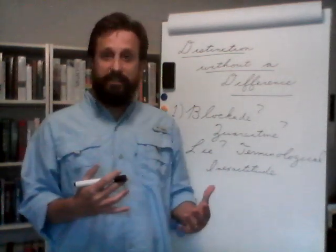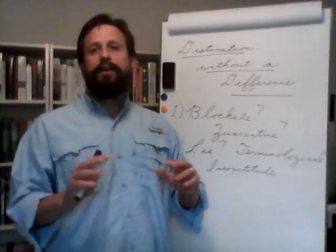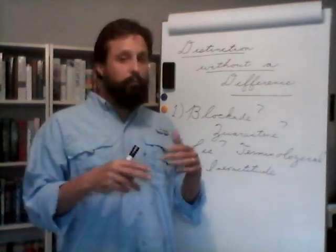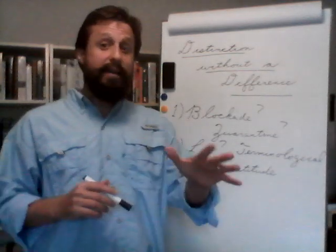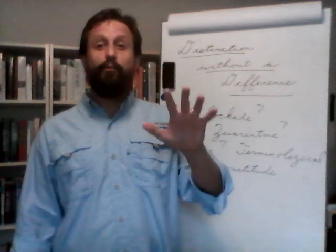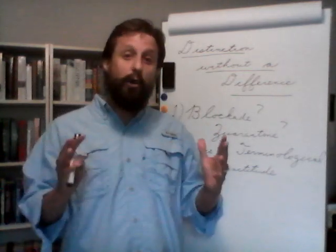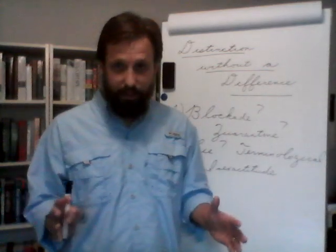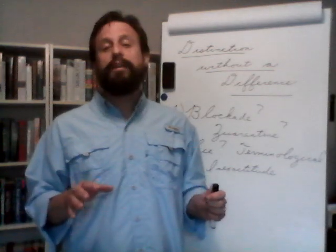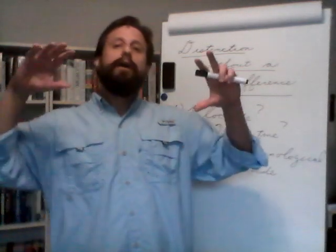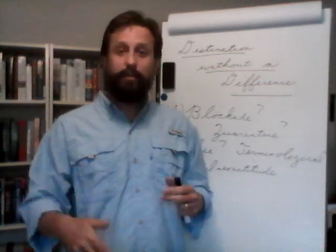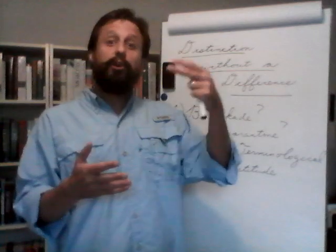So that's distinction without a difference — very common in debate and politics. That is fallacy number 28, the final informal fallacy in your textbook, which closes out our study of informal logic. Next year you'll be studying formal logic, which is focused upon the structure of the argument. You'll be looking at a lot of syllogisms — premise A, then premise B, therefore conclusion.